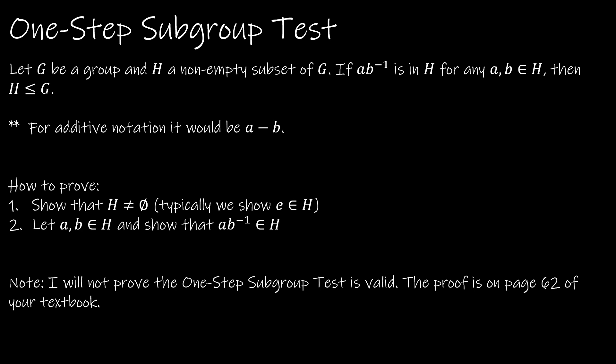This subgroup test says: let G be a group and H be a non-empty subset of G. The first key fact is that it's non-empty, so when we talk about how to prove it, that's going to be our first step — we have to show that H is not the empty set. We're going to say that if a·b⁻¹ is in H for any a, b in H, then H is a subgroup of G. We let a and b both be elements of H and show that a·b⁻¹ is also in H.